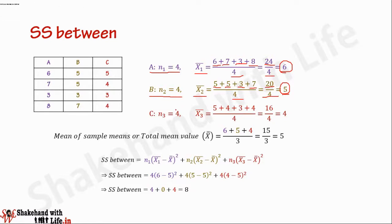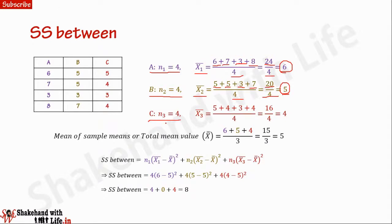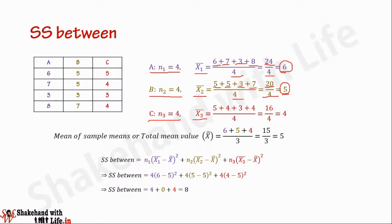Now for sample C, the data points are also 4, so the sample size is 4. The mean for sample C, x3 bar, equals 5 plus 4 plus 3 plus 4 divided by 4. That gives us 16 divided by 4, and we get x3 bar equals 4.